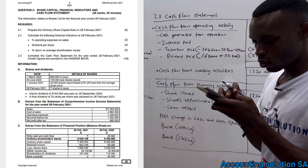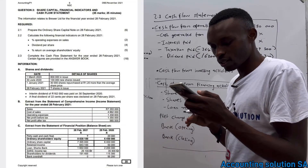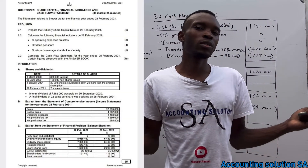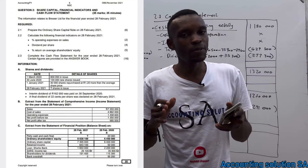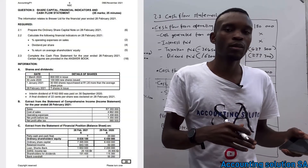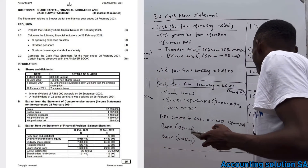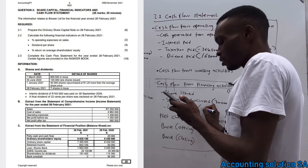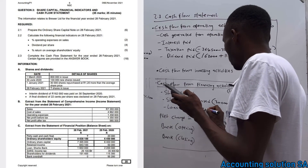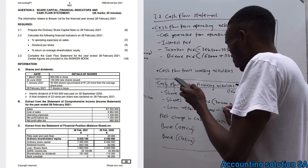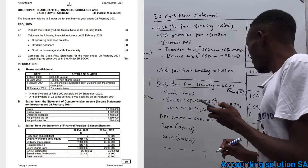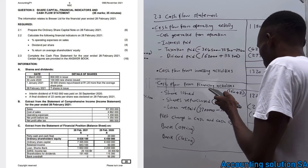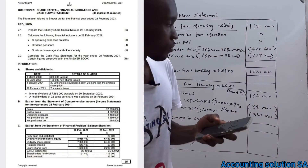For the loan: in 2020 it was R2,200,000 and it decreased to R1,650,000. A loan decreasing means you paid it back, which is an outflow. If it increased, you borrowed again. The repayment amount is R2,200,000 minus R1,650,000, which gives R550,000 outflow.